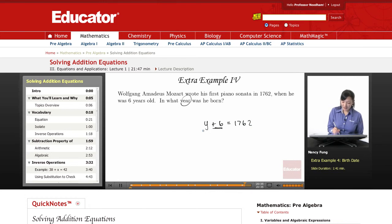So here's his age of six, the year he was born, this is years past, because six years passed when he became six years old, and this equals the time of the sonata.